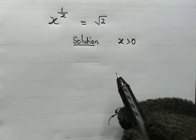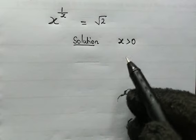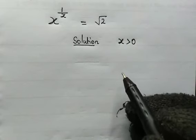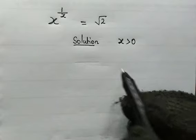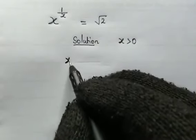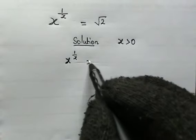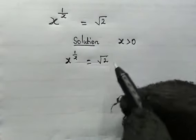Here we are going to solve for positive integers x. Okay, here we have x to the power of 1 over x, this is equal to root 2.